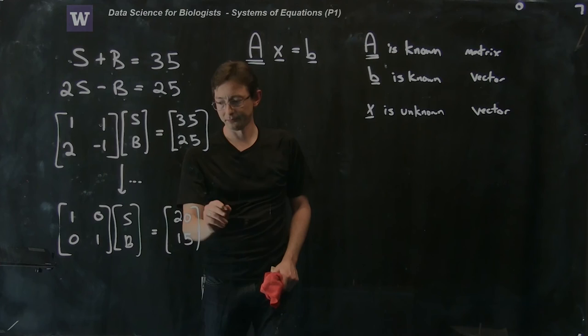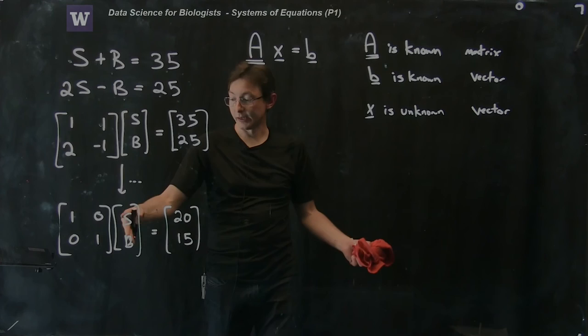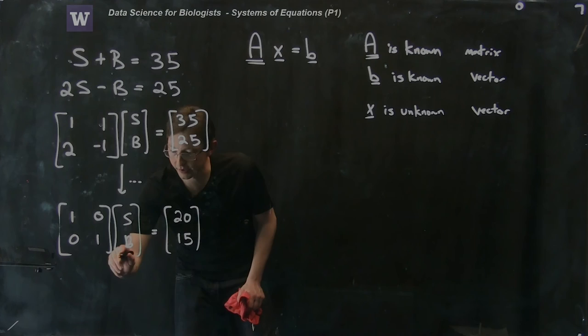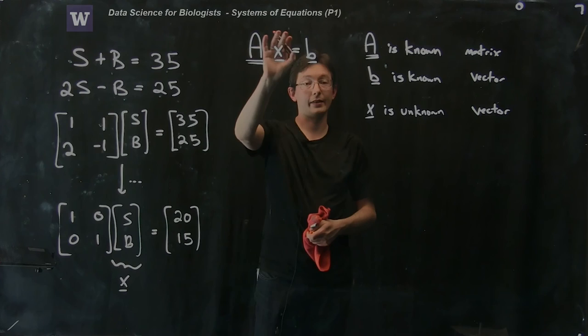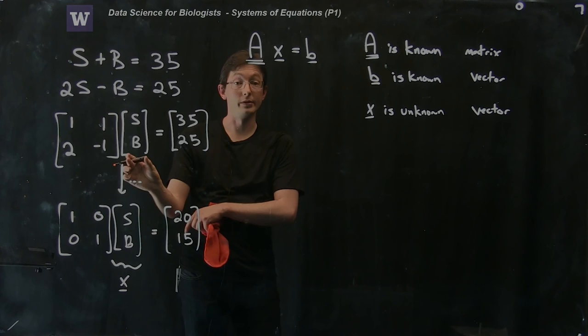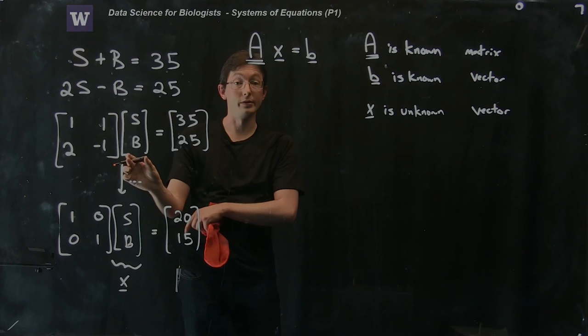And we'd like to solve for it. So this vector x is Sally and Bob's age, right? Sally and Bob equals 20 and 15. So x is the unknown vector that we just solved for here. This thing right here is my vector x, and this is a very general way of writing equations as a form Ax equals b. We write a system of equations as a matrix times a vector of unknowns equals a vector of things we do know, and we're going to solve for x.